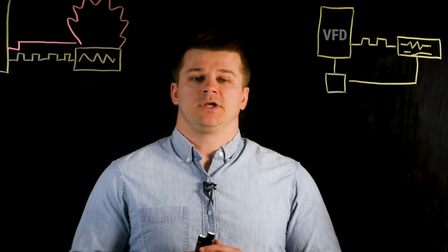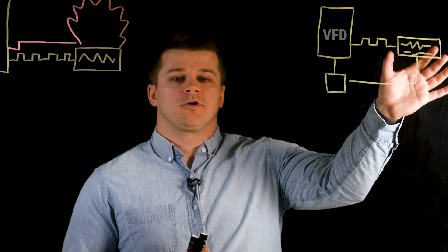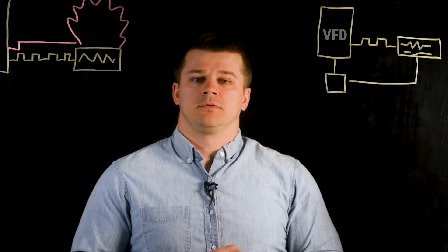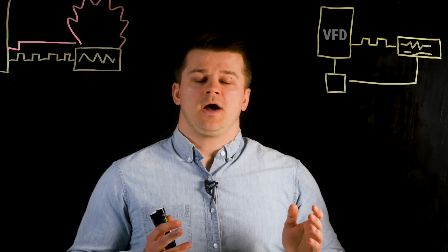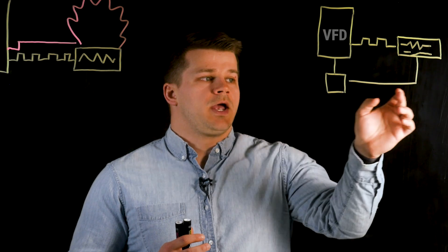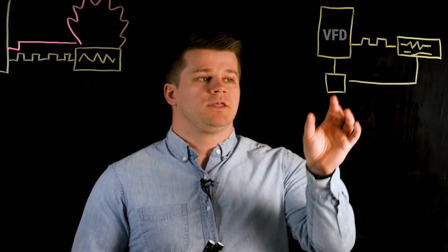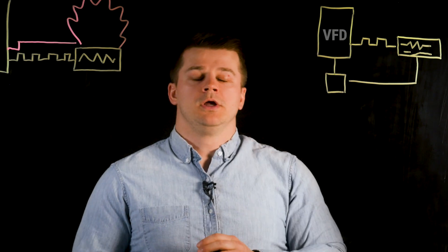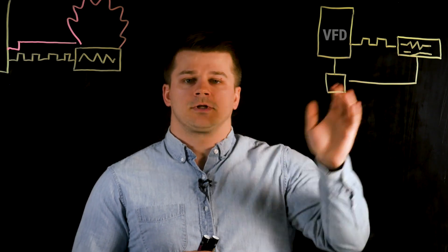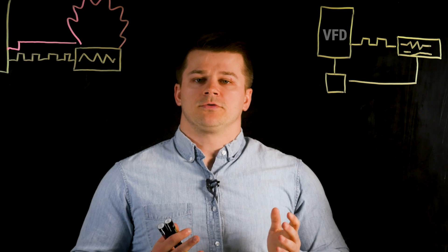The first option to protect the braking resistor is with the use of a thermal switch within the resistor itself. When the resistor gets too hot, the switch opens and it's connected to the auxiliary contact of the drive's mainline contactor. This shuts off power to the drive, so even if the transistor fails closed, there's no power going to the resistor.